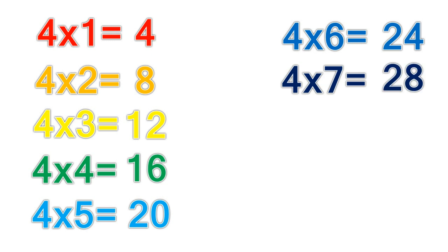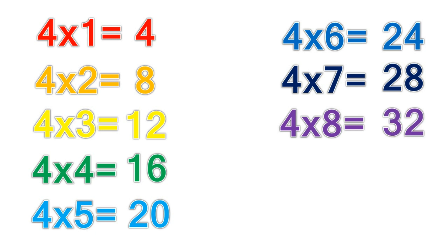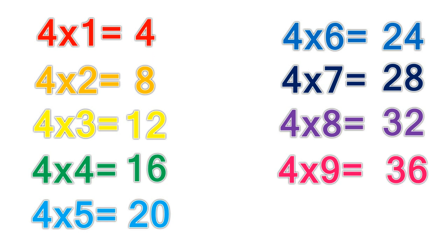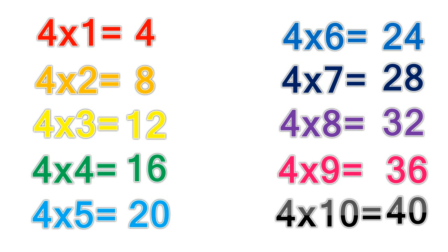4 times 7 equals 28. 4 times 8 equals 32. 4 times 9 equals 36. 4 times 10 equals 40.